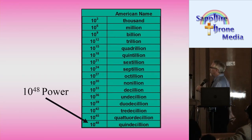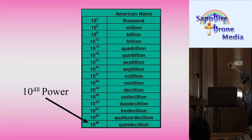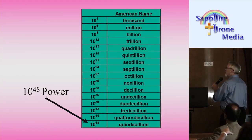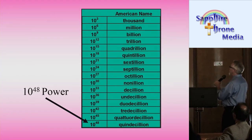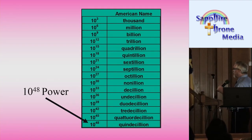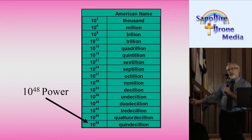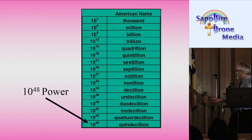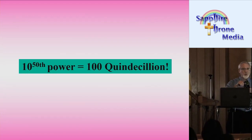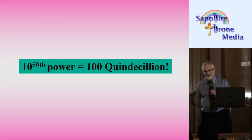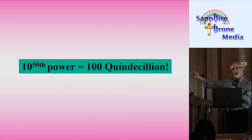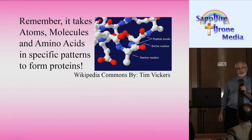This is what it looks like on the number chart. Many of us are familiar with thousand, million, billion, and even trillion. But we never really hear about quadrillion, quintillion, sextillion, or septillion. 10 to the 48th power is a quintessillion, but 10 to the 50th power is 100 quintessillion — that is a huge number. And they say that if it's beyond that, it's impossible.